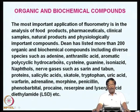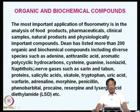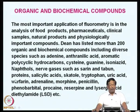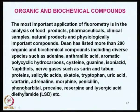Dean has listed more than 200 organic and biochemical compounds including diverse species such as adenine, anthranilic acid, polyaromatic hydrocarbons (PAHs present in air as pollutants), cysteine, guanine, isoniazid, naphthols, nerve agents such as sarin and tabun, proteins, salicylic acids, tryptophan, uric acid, porphyrin, adrenaline, penicillin, phenobarbital, procaine, reserpine, and lysergic acid diethylamide (LSD), all determinable using fluorescence methods available in the database.